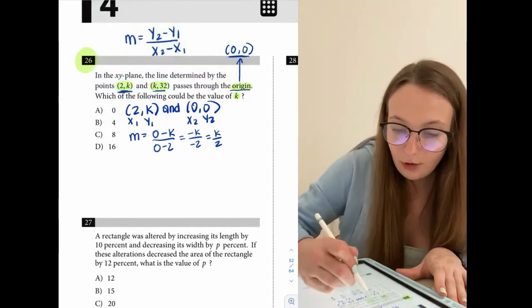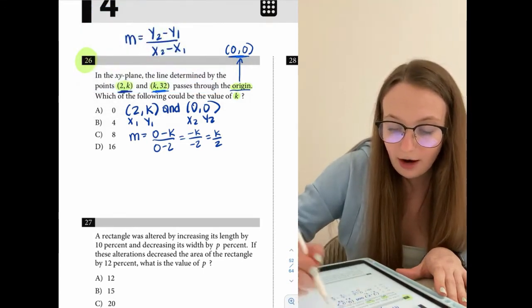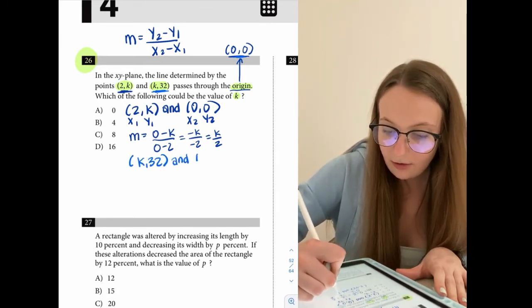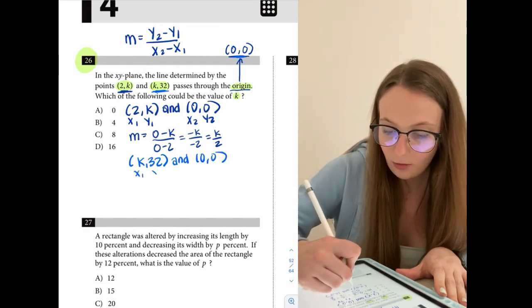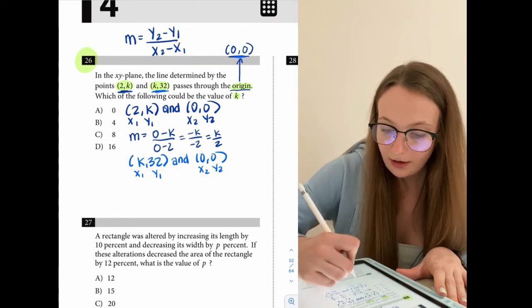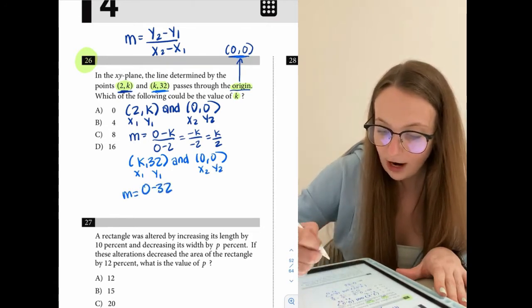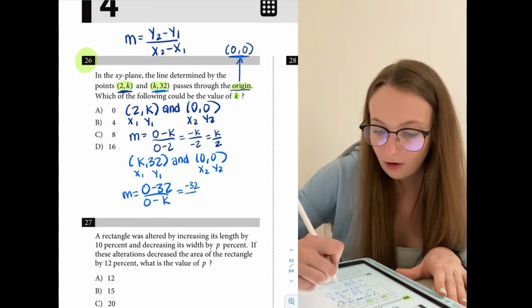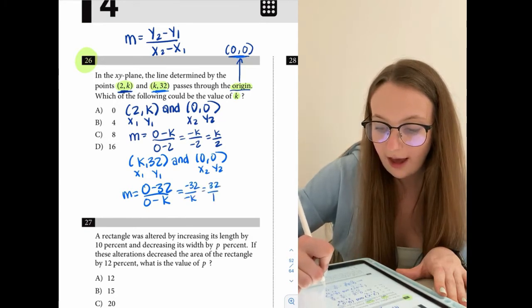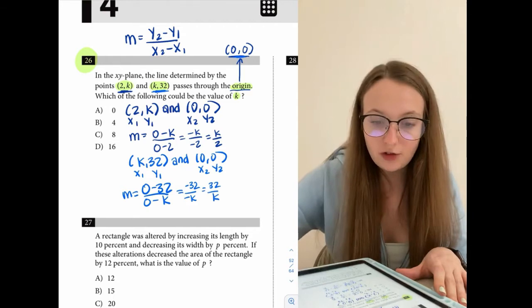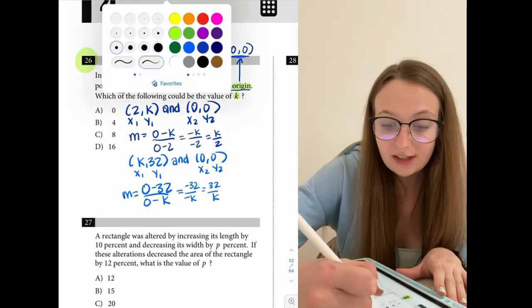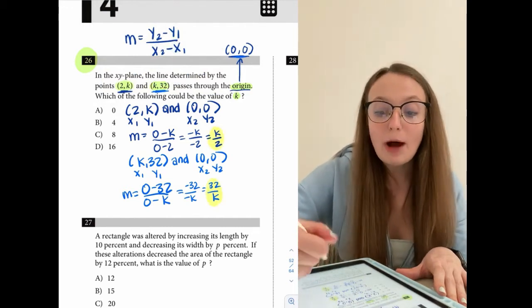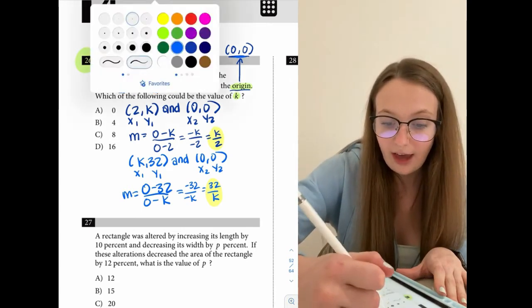Now we're going to go ahead and try to find the slope of (k, 32) and (0, 0). So we'll do (k, 32) and (0, 0). Again, let's call this one x1, y1, we'll call this one x2, y2. So we get 0 minus 32 for the slope, the top over 0 minus k. So that comes out to negative 32 over negative k, which is 32 over k. So the reason why I found the slope for each of these combinations is because I know that this is the slope of the exact same line. So these two slopes then have to be equal to each other.